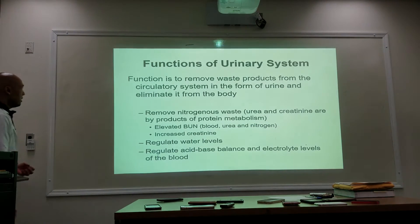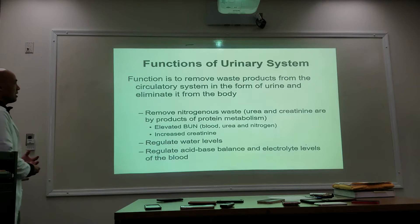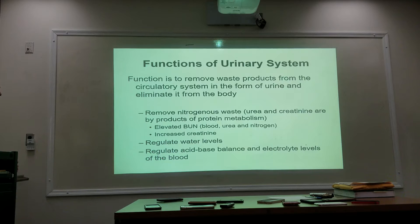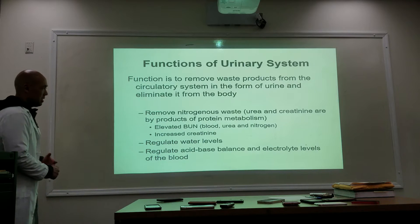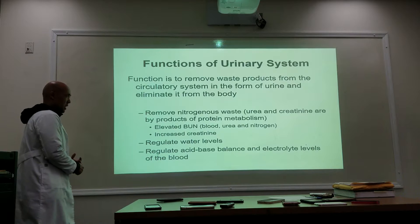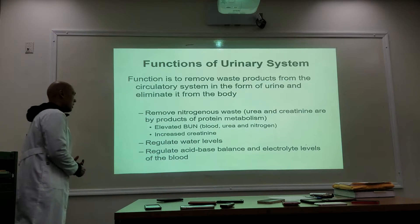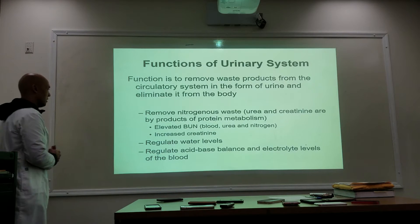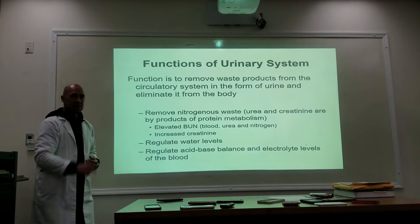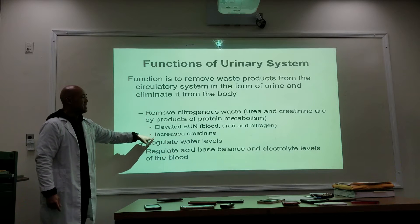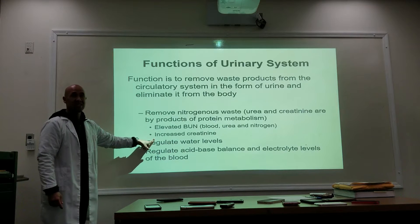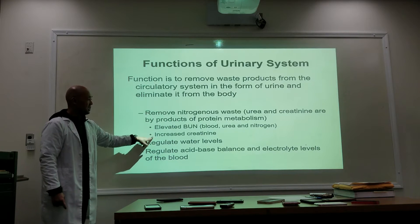The function of the urinary system is to remove waste products from the circulatory system in the form of urine and eliminate them from the body. It removes nitrogenous waste, including urea and creatinine, which are byproducts of protein metabolism. Note: the slide should say increased creatinine, not decreased — that has been corrected.